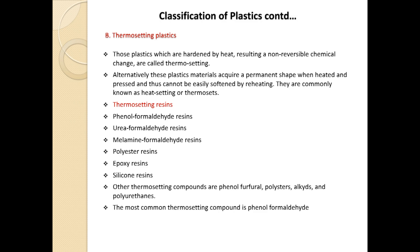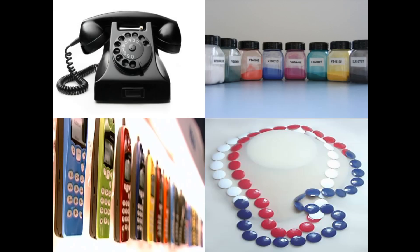Thermosetting plastics are those plastics which are hardened by heat resulting in a non-reversible chemical change, and thus cannot be recycled again and again. These plastic materials acquire a permanent shape when heated and pressed, and cannot be easily softened by reheating. They are commonly known as heat-setting plastics. Examples include urea formaldehyde, phenol formaldehyde, polyester resin, epoxy resin, and silicone resin.